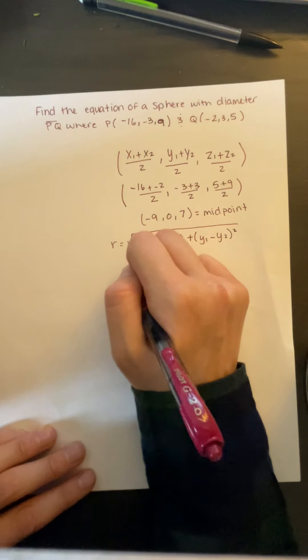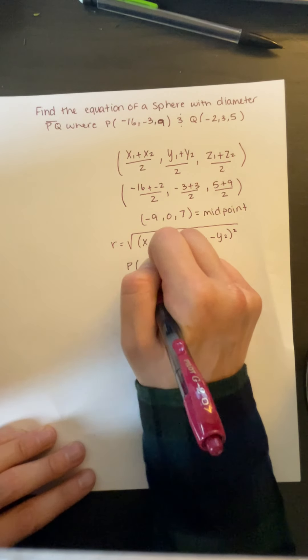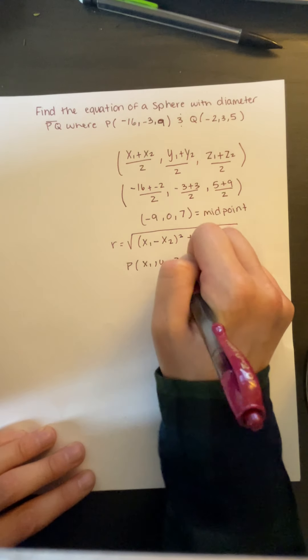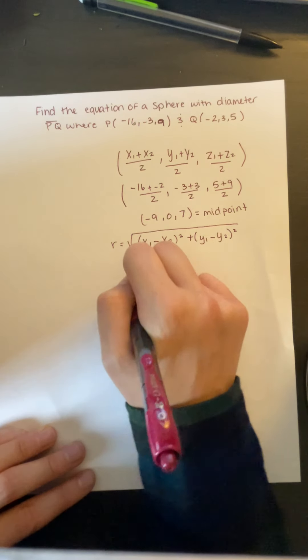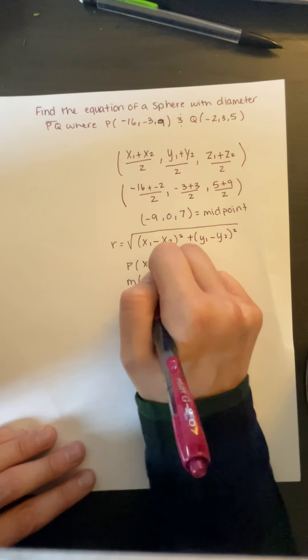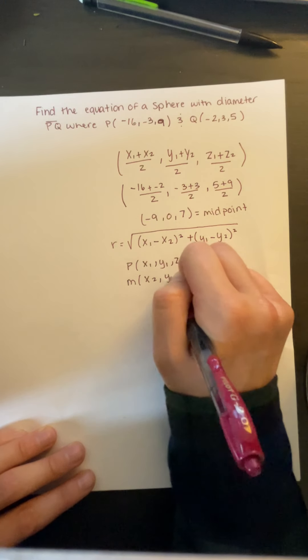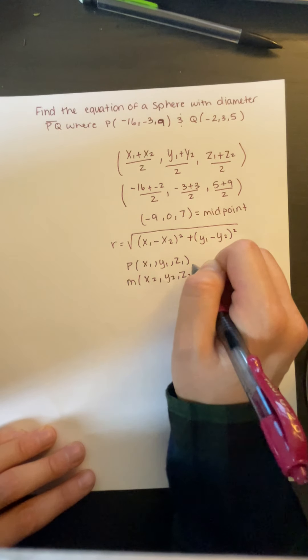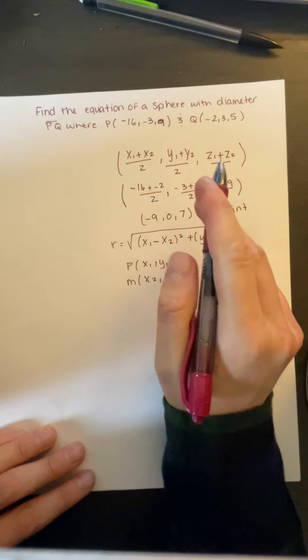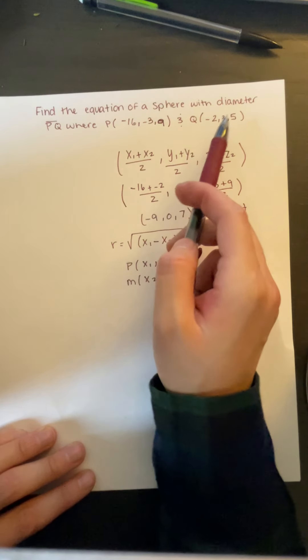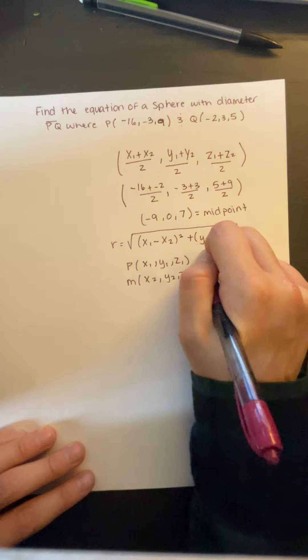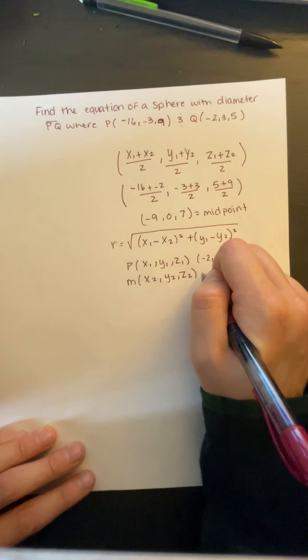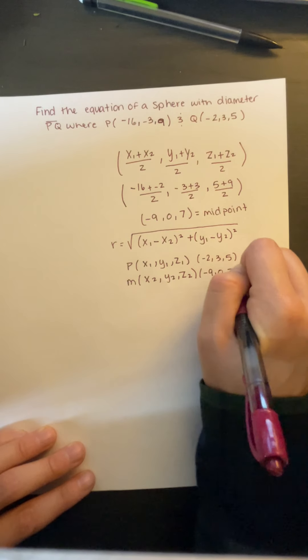Where the point is x1, y1, and z1, and our midpoint is x2, y2, and z2. You can use any point. I'm going to use Q because it's easier and doesn't have as big numbers. So I'll use negative 2, 3, and 9, and our midpoint is negative 9, 0, and 7.